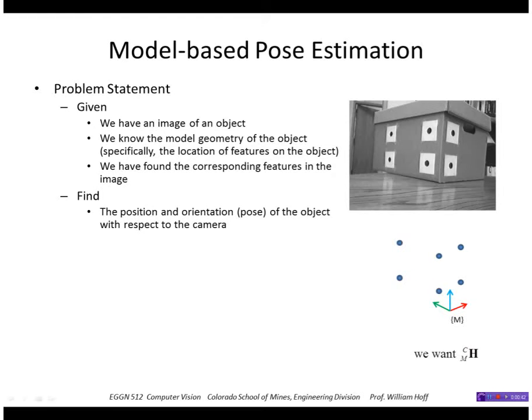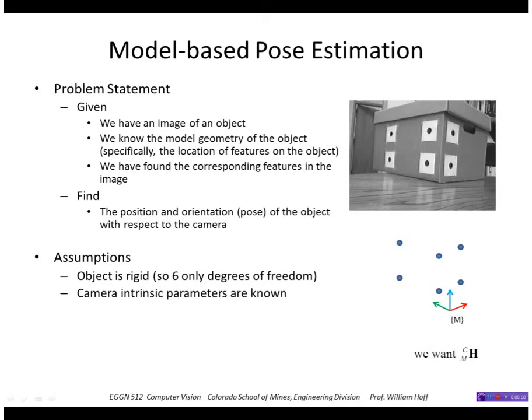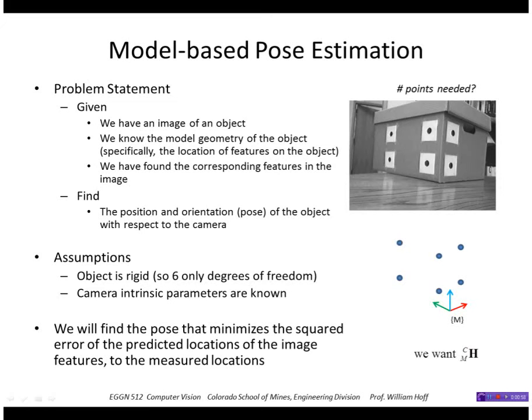The goal is to find the pose of the object with respect to the camera, the transformation from model to camera. We'll assume the object is rigid, so there's only six degrees of freedom, and the camera intrinsic parameters are known. We'll solve this by doing a least squares fit, minimizing the squared error of the predicted locations of the image features to the measured locations.